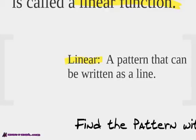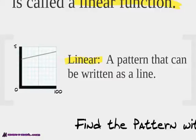So linear — basically that means a pattern that can be written as a line. Notice the word line is in there. We're going to be writing equations today. We're going to be looking at lines and trying to find a pattern. Here's another example of a line. We look and remember we try to find the y-intercept, and then we take the slope and write our equation from that.